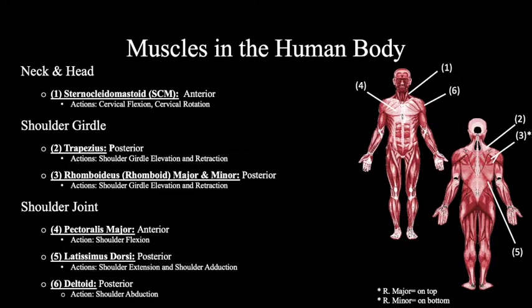Next, we have three muscles in the shoulder girdle. The first is the trapezius, which is located on the posterior side and is responsible for shoulder girdle elevation and retraction — essentially shoulder shrugging. We also have the rhomboid major and minor, which are two separate muscles located on the posterior side of the body, also responsible for shoulder girdle elevation and retraction.